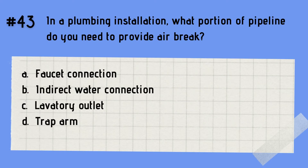Question 43: In a plumbing installation, what portion of the pipeline do you need to provide an air break? A. Faucet connection. B. Indirect water connection. C. Lavatory outlet. D. Trap arm. The answer is B — indirect water connection. Remember that where there is an indirect water connection in a plumbing installation, there must be an air break. An air break is an indirect connection of a drain line to the drainage system where the drain line terminates below flood level.